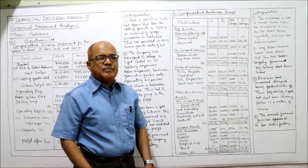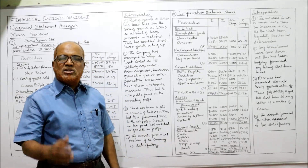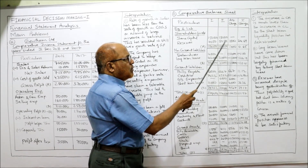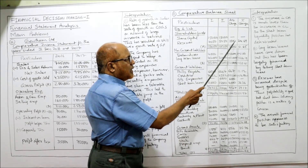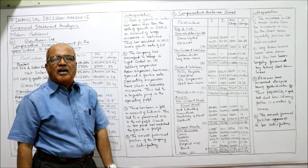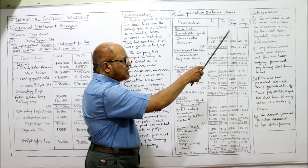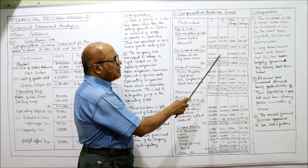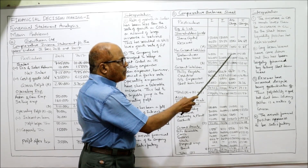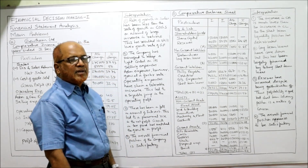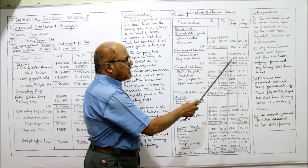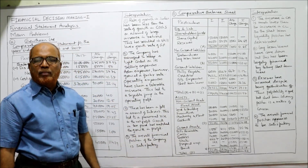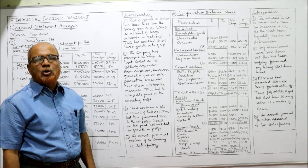For first year and second year values filled in, we now calculate absolute change and percentage change. Absolute change is second year minus first year. For example, 1,50,000 minus 1,50,000 shows no change. Another example: 5,050 minus 4,050 is 1,000, and 1,000 divided by 4,050 multiplied by 100 gives 24.69 percent. Some items show negative figures — for example, debentures last year 4,000, current year nil: 0 minus 4,000 is minus 4,000, divided by 4,000 multiplied by 100 gives minus 100 percent. Similarly, 31,000 minus 42,000 gives minus 11,000; minus 11,000 divided by 42,000 multiplied by 100 gives minus 26.19 percent.